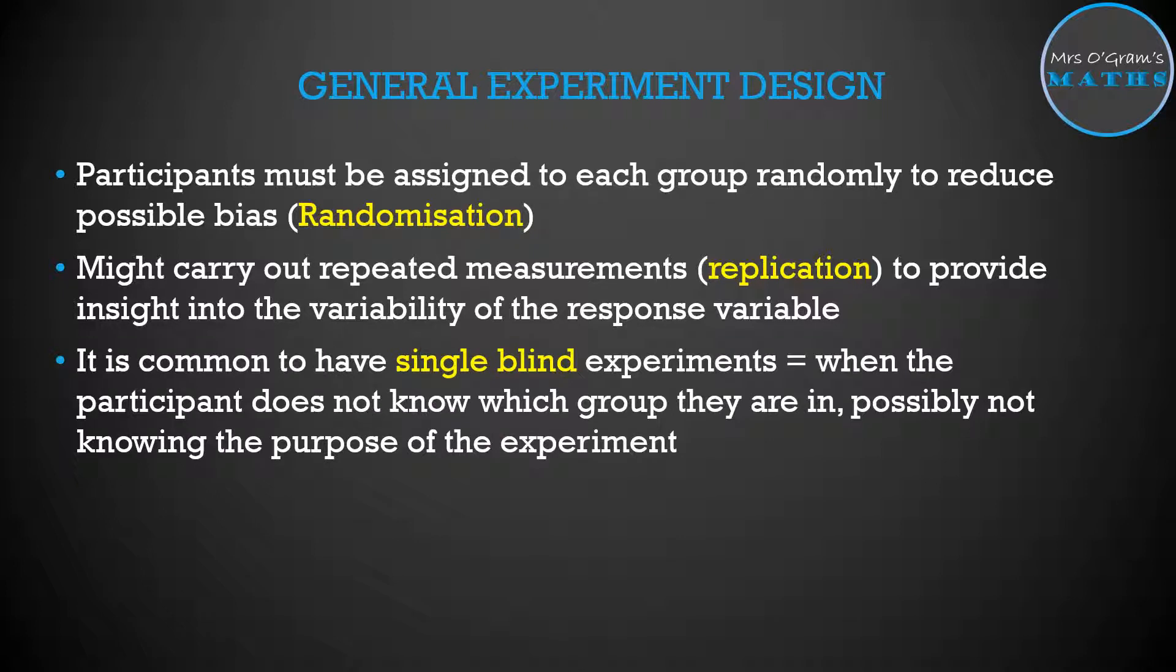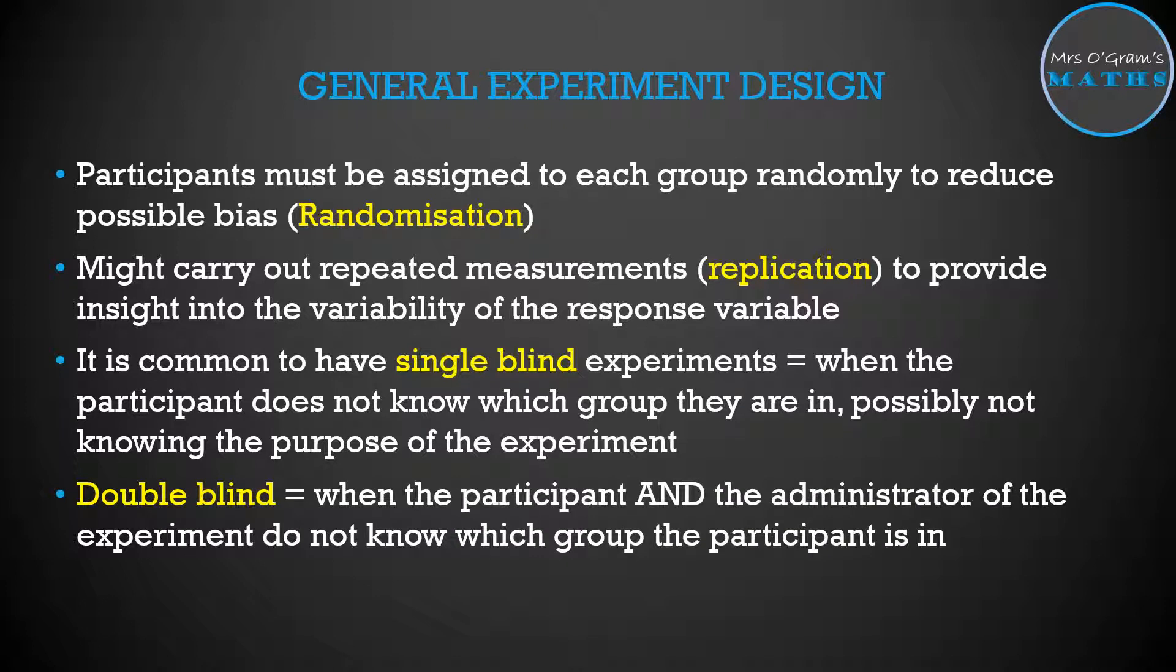There's two types of blinding in experiments, and by that we mean that the people don't know or the participants don't know what's going on really for them to try to minimize things like the placebo effect, which we'll talk about in a second. It's common to have a single blind experiment, and that means that the person participating in the experiment doesn't know which group they're in. If you're doing a control and a treatment group, they won't know if they are getting the control treatment, the control thing happening to them, which is nothing usually, or if they're actually receiving a treatment. They might not actually even know the purpose of the experiment. Generally speaking, if you can minimize the amount of information the participants know about it while still remaining ethical, then you'll have some more reliable results.